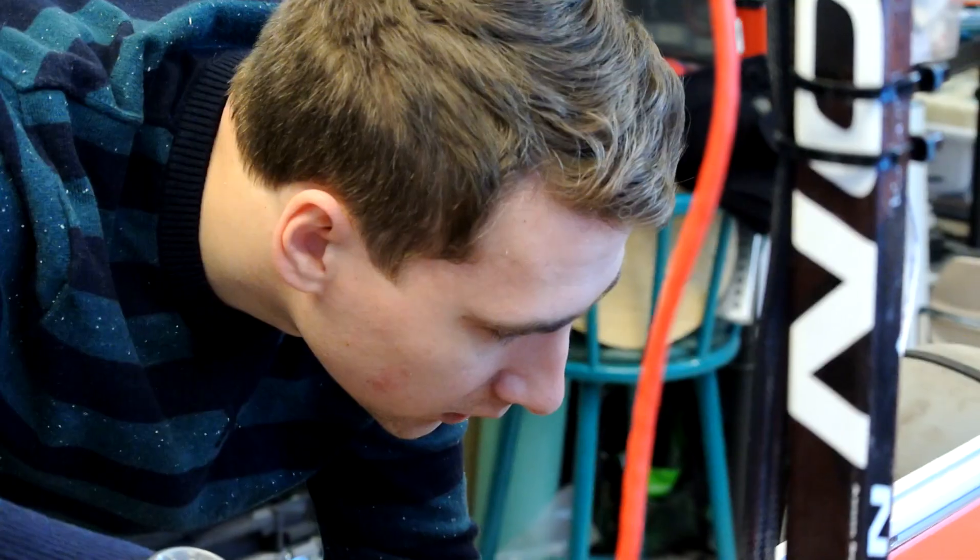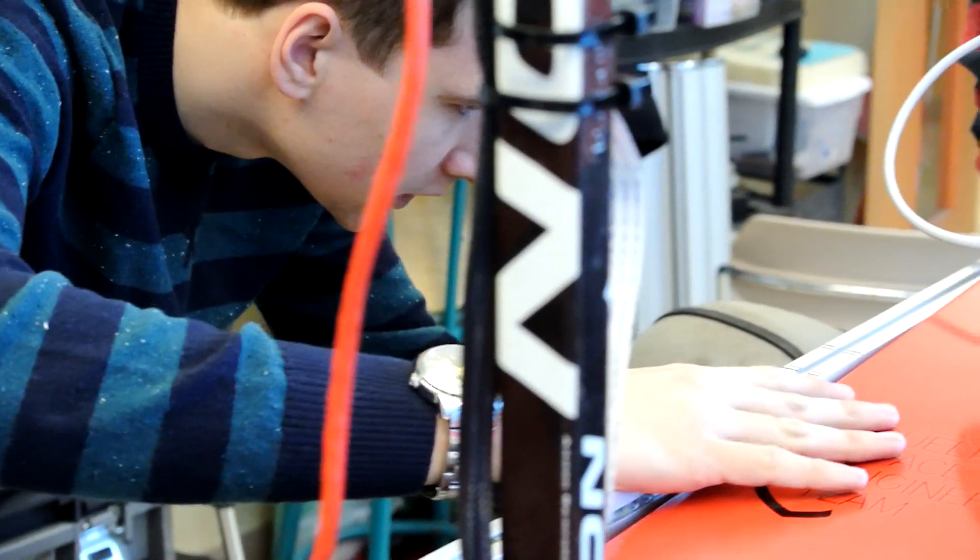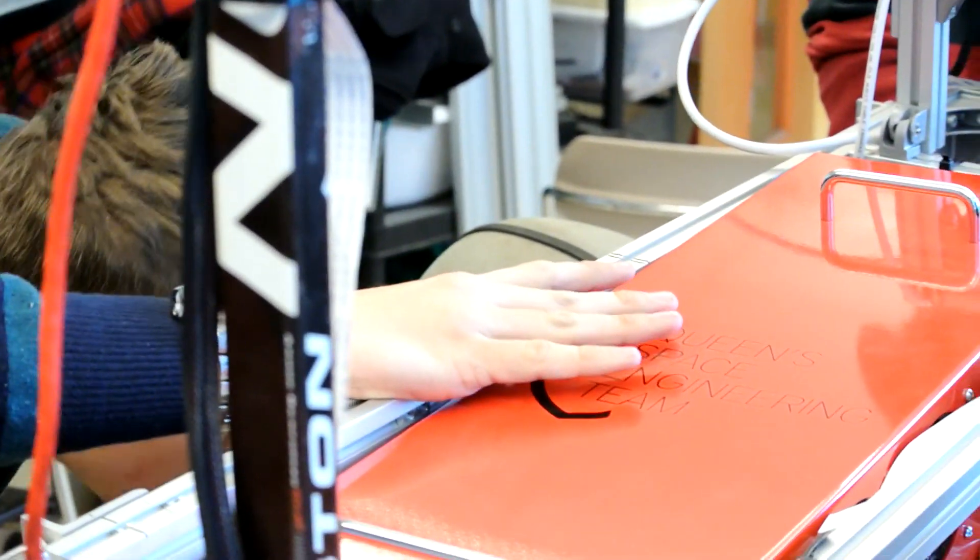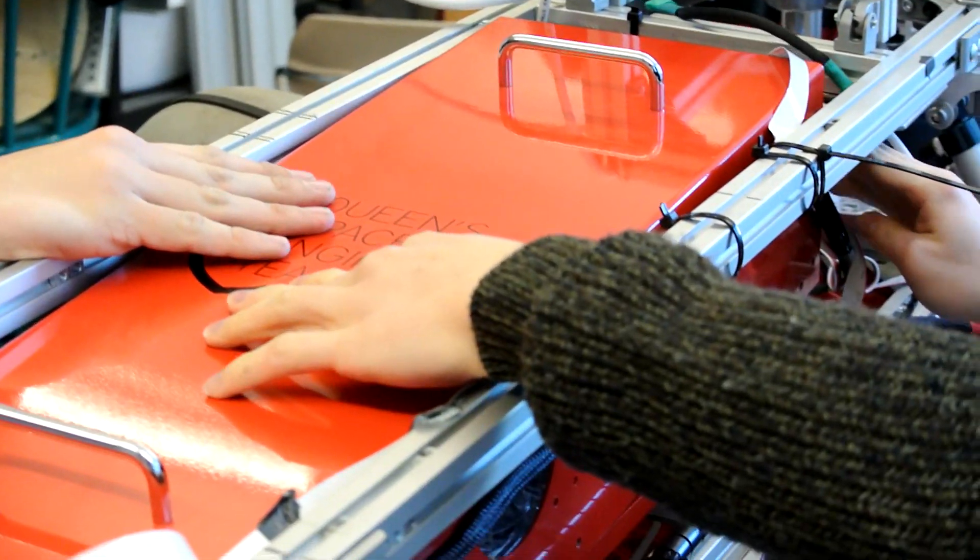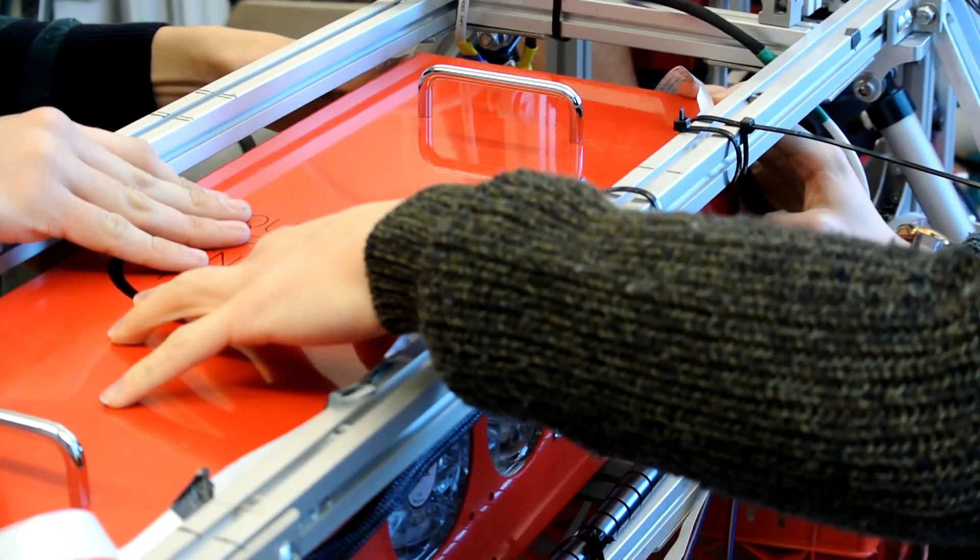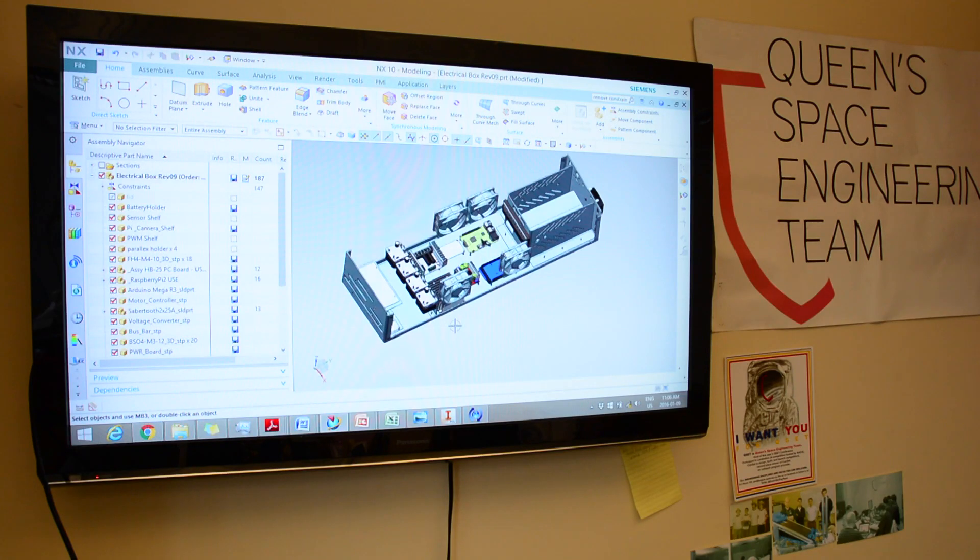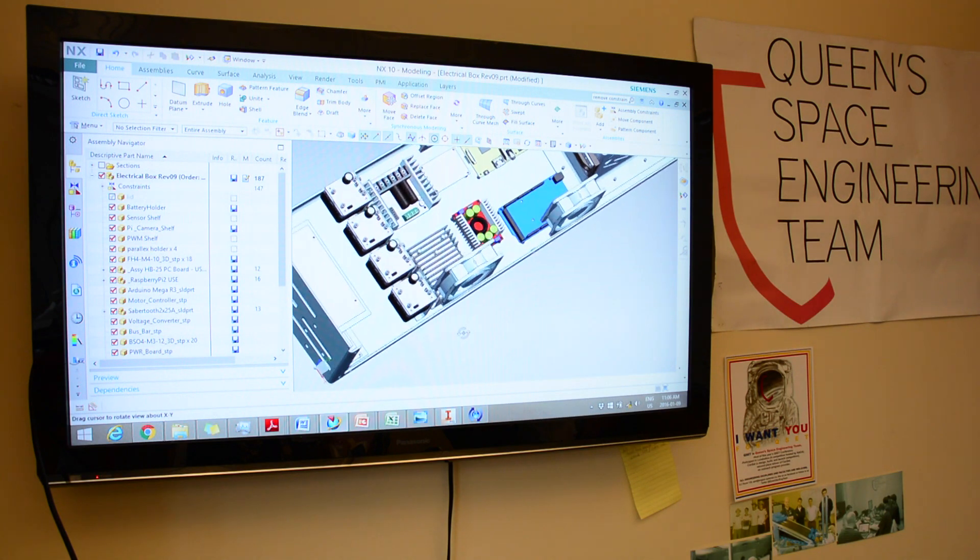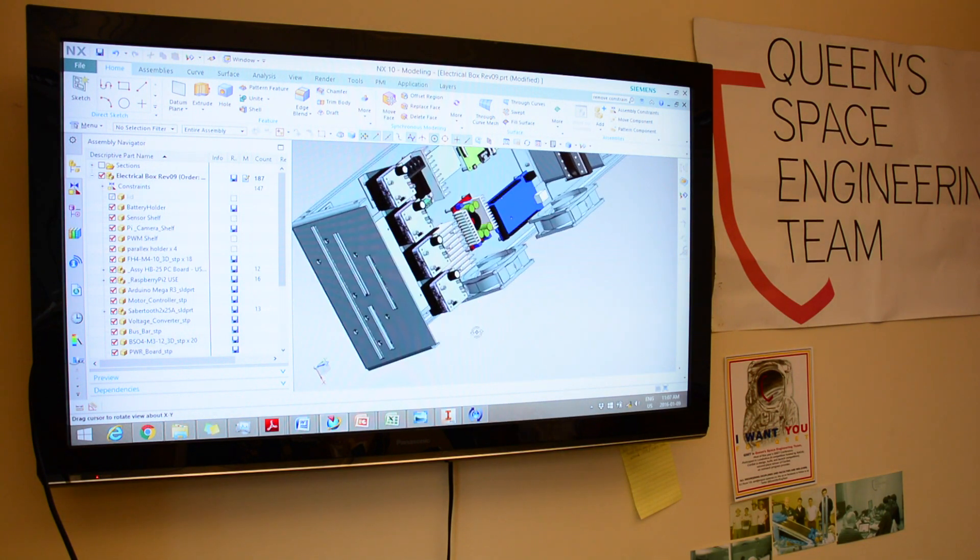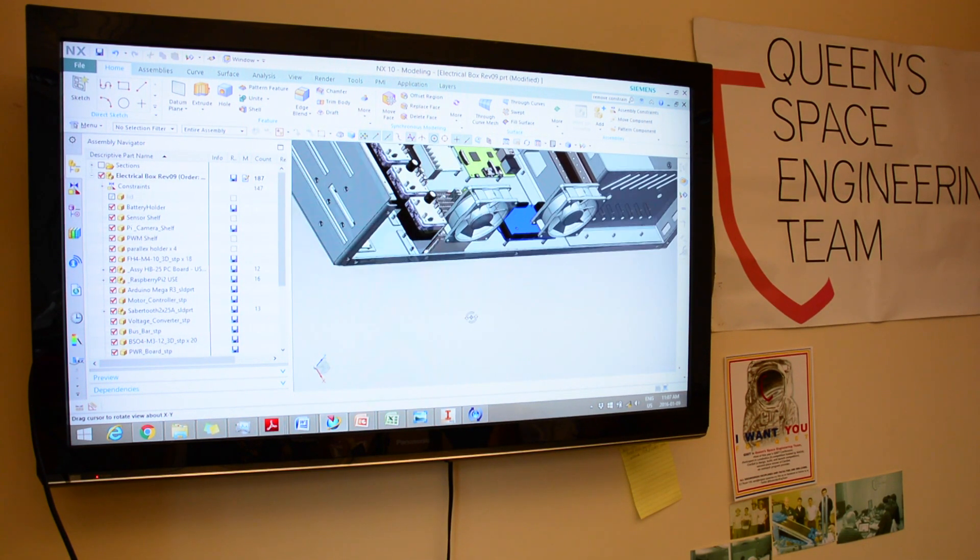This year QSET decided to utilize Protocase's generous sponsorship of URC to develop a fully encapsulated and modular control box for the rover. The electrical box was a joint effort between both electrical and mechanical teams with mounting points for all electrical components, easy access to the various ports of each PCB, and built-in connectors for motor and actuator interfacing. This new design gives the team the ability to hotswap components out due to failure or damage between tasks while improving wire management and reducing debugging time.